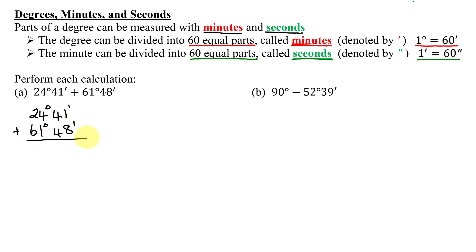Then I just add vertically: 1 and 8 is 9, 4 and 4 is 8, 4 and 1 is 5, 2 and 6 is 8. So I end up with 85 degrees 89 minutes.